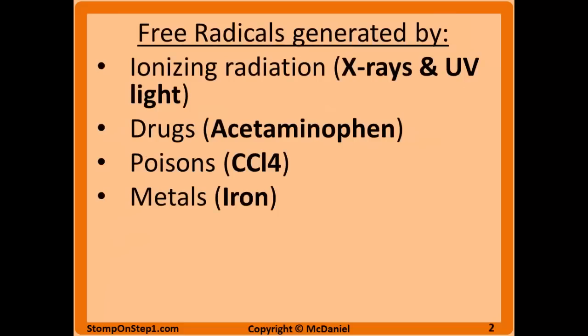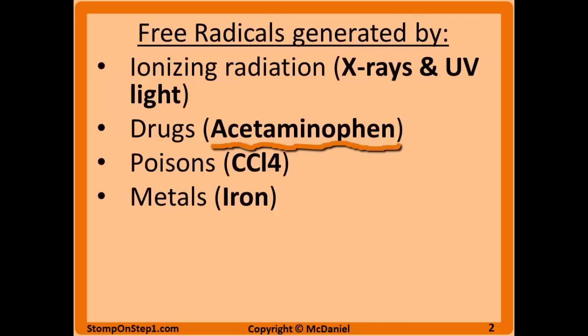Free radicals can be generated by a number of substances and processes including x-rays and UV light from the sun, which is going to split water into molecules that have a free radical. You've also got drugs like acetaminophen which can cause free radicals to build up, poisons like carbon tetrachloride, as well as certain metals that end up in the body like iron.